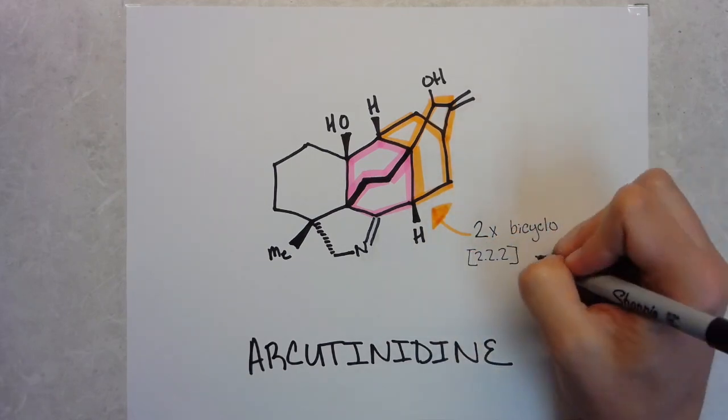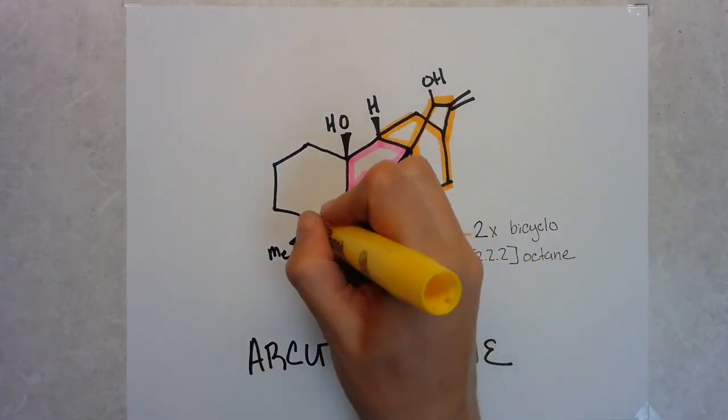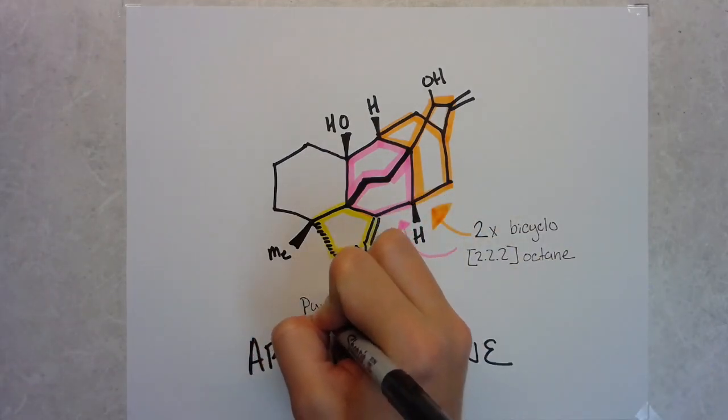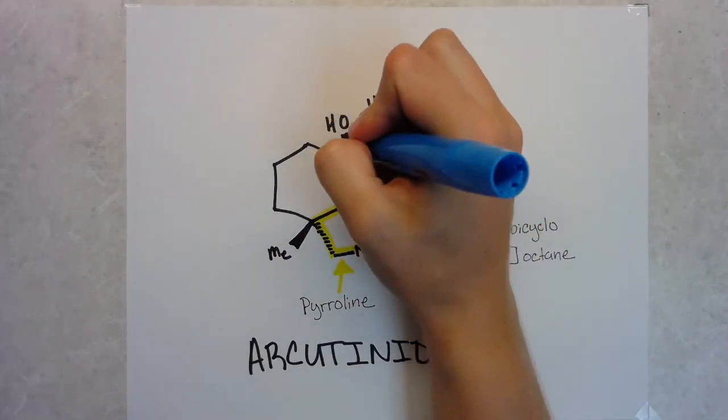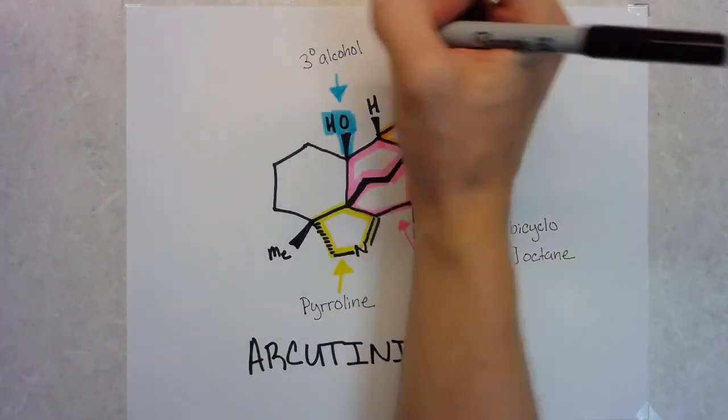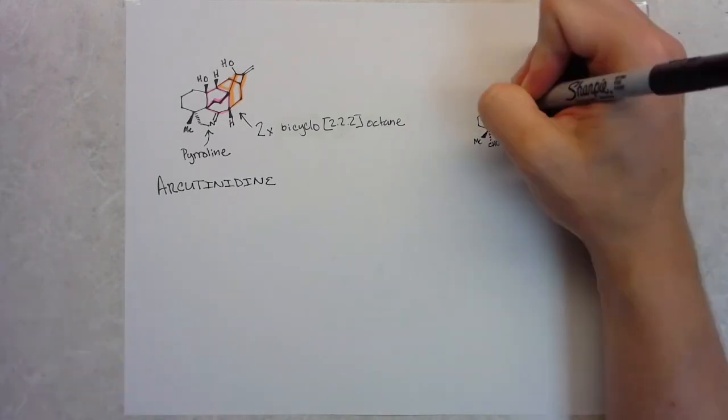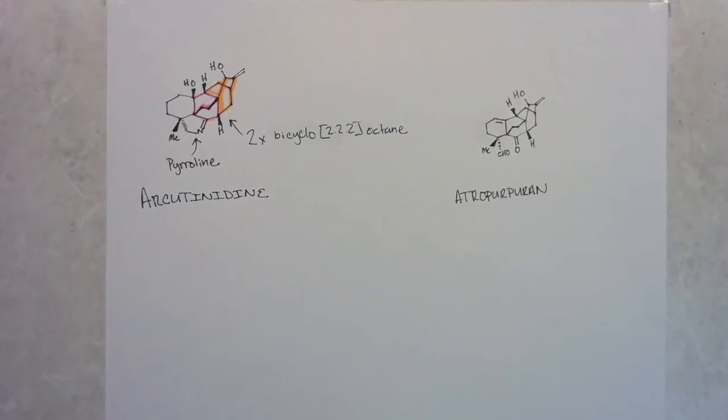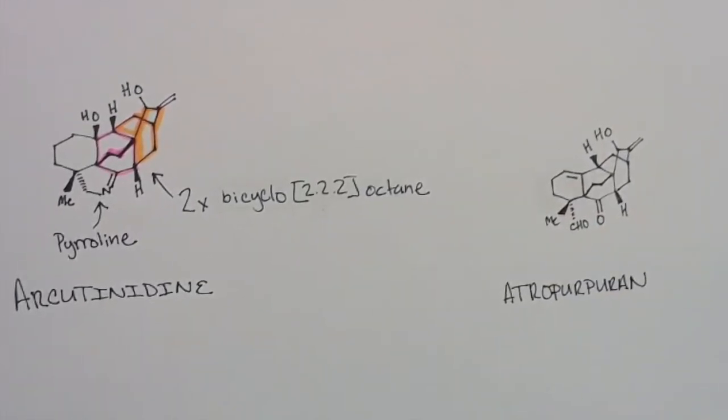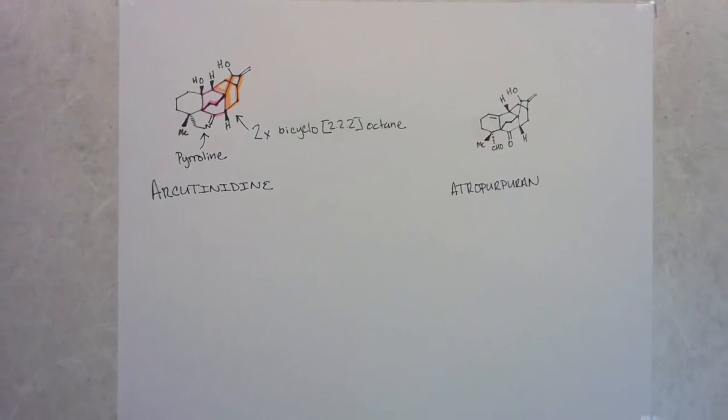This arcutinidine molecule has a lot of topological complexity and stereochemical information embedded into the molecule. Specifically, there are a number of quaternary stereocenters, two different bicyclo-2-2-2 octanes that are doubly fused together, and a fused pyrrolein moiety that has created problems for chemists in the past. The Chin group who came out with their synthesis in late May had previously tried to synthesize atisine, which is like a simpler core, but when they tried to expand to arcutinidine, they ran into problems specifically with the pyrrolein ring and the tertiary alcohol.